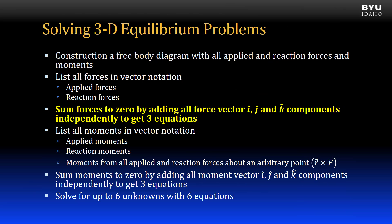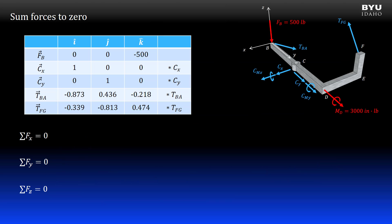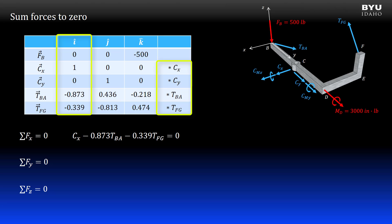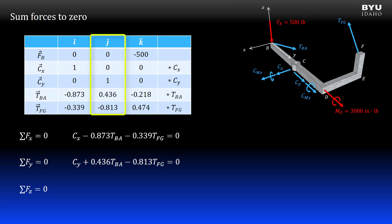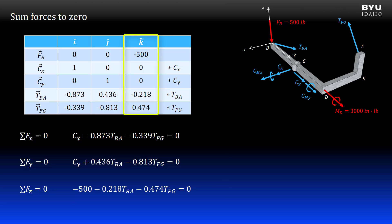The next step is to sum forces to zero by adding all force vector i, j, and k components independently to get three equations. I sum x-direction components to zero by adding all the nonzero terms in my i component column, including the unknown force magnitudes. I sum y-direction components to zero by adding all the terms in my j component column, and I sum z-direction components to zero by adding all the terms in my k component column. I will name these equations 1, 2, and 3.